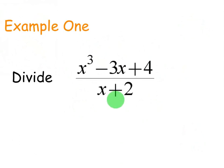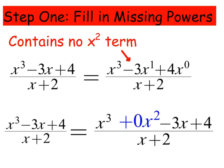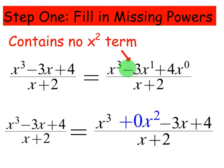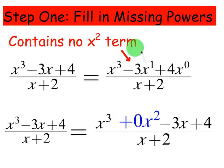The first thing we're going to do for step one is fill in missing powers. If you look at the top, you go from x cubed to an x term, and what's missing is an x squared term. In order to properly do long division, you can't have any missing terms — you have to fill them in. They are basically zero; the coefficient is going to be zero. So because there's no x squared term, I'm going to put a 0x squared.